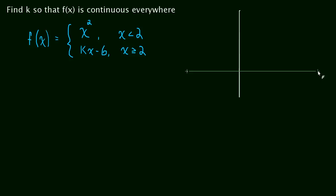First of all, when x is less than 2, we just have a parabola. So that's easy enough to draw in here. So when x is less than 2, we have this parabola. Of course, when x actually is 2, it's not the parabola anymore. That's why there's a hole there.